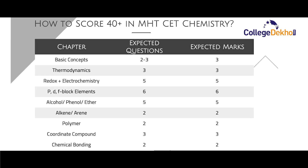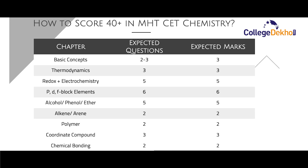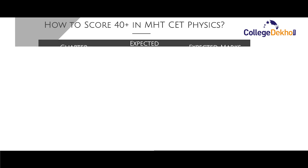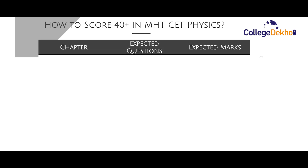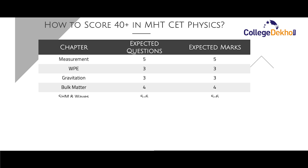It is advisable to be proficient with these Chemistry chapters first, and then revise the rest to score 40 plus marks. Now, how to score 40 plus in MHT CET for Physics. Like Chemistry, the Physics section carries a total of 50 marks for 50 questions. With proper revision, it is easy to score 40 plus marks in Physics. Let us look at the most important topics in Physics for MHT CET.